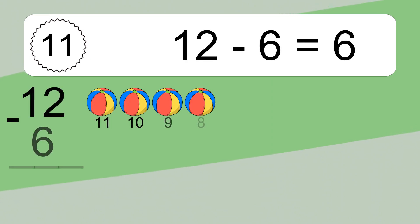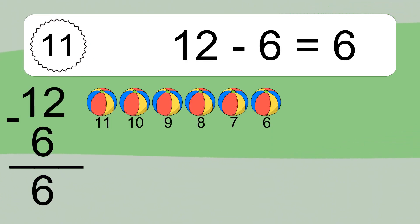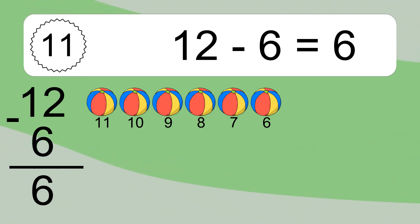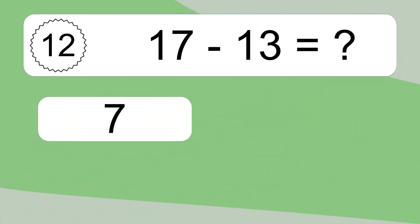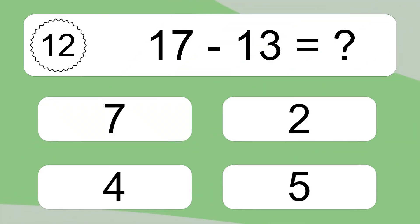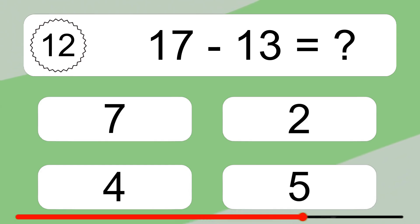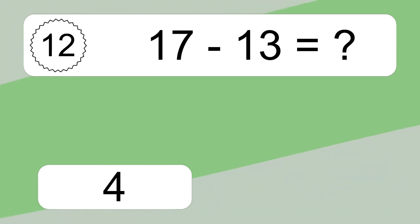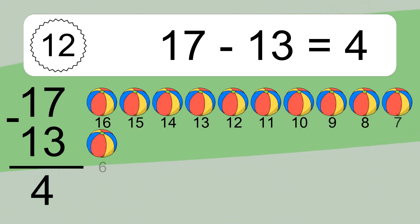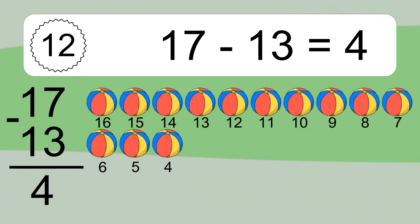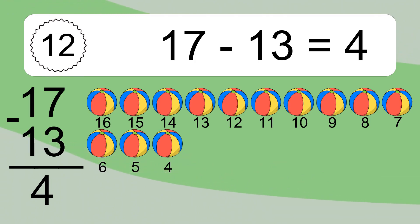12 minus 6 equals what? 12 minus 6 equals 6. Let's count it: 11, 10, 9, 8, 7, 6. 17 minus 13 equals what? 17 minus 6 equals 4. Let's count it: 16, 15, 14, 13, 12, 11, 10, 9, 8, 7, 6, 5.